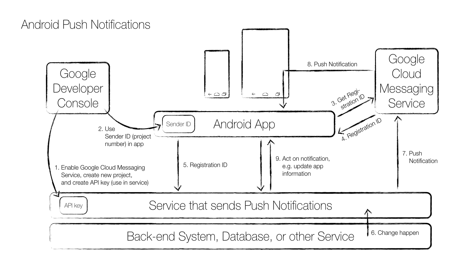With the sender ID, the app will request a registration ID for the device in step three, and when it's returned in step four, it's usually shared with an omni-channel service in step five to be used when sending push notifications. When something happens in the backend, indicated by step six, the server is either notified or has to poll the backend to get the changes and sends a push notification message to the GCM in step seven. The GCM sends it to the device, which forwards it to the app in step eight, and the app then typically requests new information from the service in step nine.